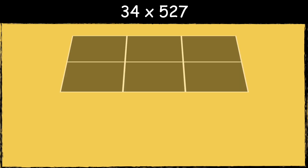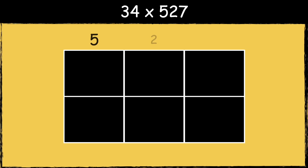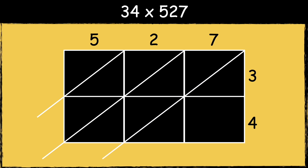Here is the next example: 34 multiplied by 527. First we draw the grid. We put 527 along the top and 34 along the side. Next draw your diagonal lines going through the boxes.